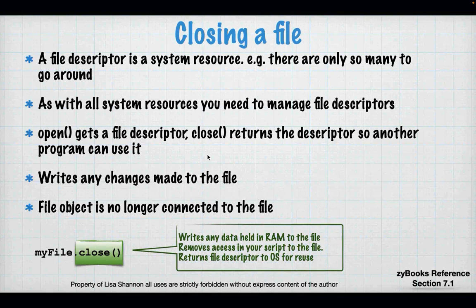The file descriptor is a system resource — you've got to manage your resources. Open gets the descriptor; close returns the descriptor. Close also writes any changes you made to a file. If you are doing file processing and forget to close, Python doesn't actually necessarily write the contents to the file, because Python keeps things in a buffer. When you close it, the file object is also no longer connected to the contents of the file, so the file descriptor can't get to anything.